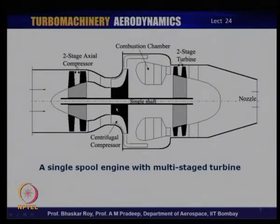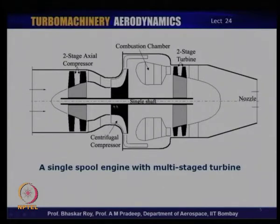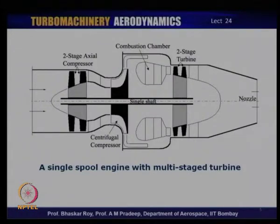This is a kind of configuration popular with turboshaft engines used in helicopters, running at very high rotational speeds of the order of 25,000–40,000 RPM. One set of compressors is axial and another is centrifugal. This configuration features a multi-stage arrangement of turbines on a single shaft, and is notable in turboshaft engines.